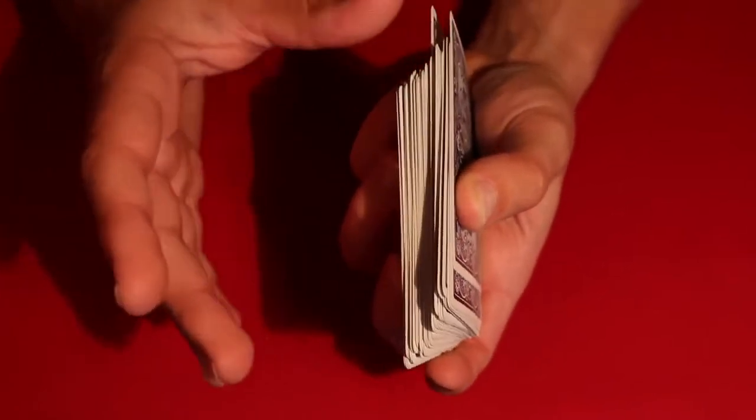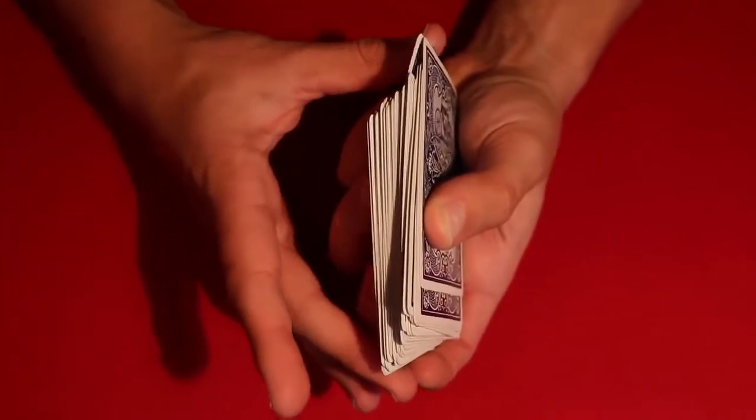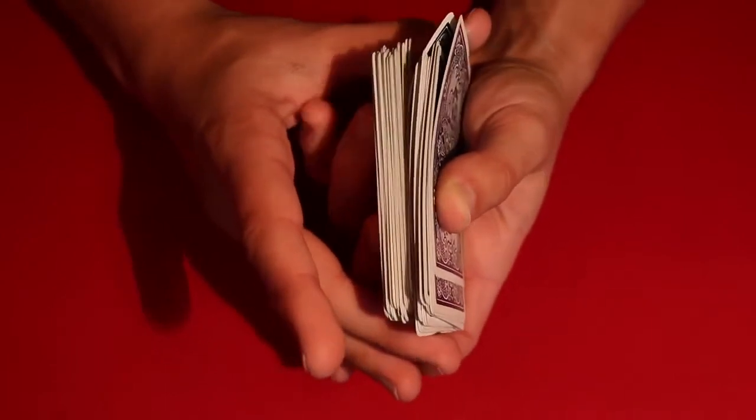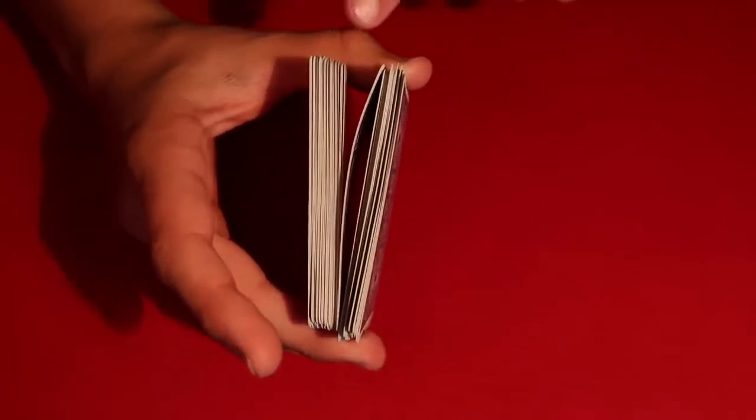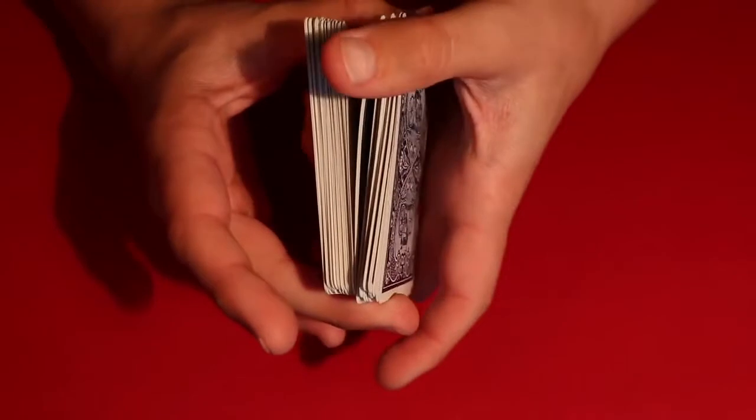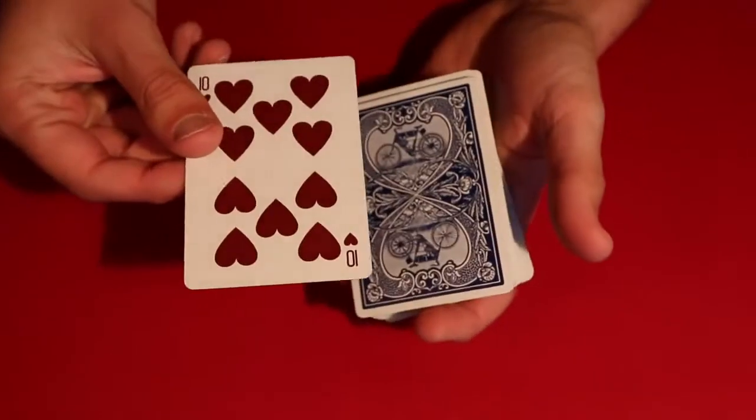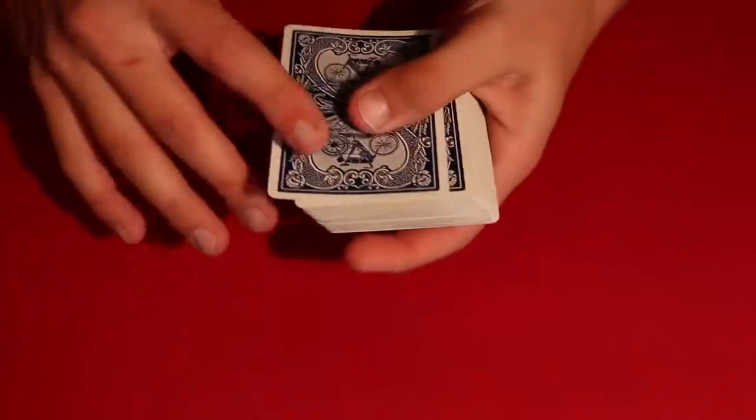So right above this out jog, all you have to do is take your thumb and your middle finger, push up into the card and then close the grip. And that's going to cause the deck to form a break right here and all you do is pick up from the break. And that's going to be how you bring the spectators card to the top.